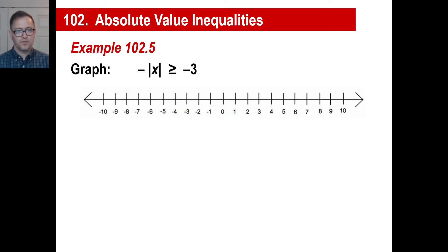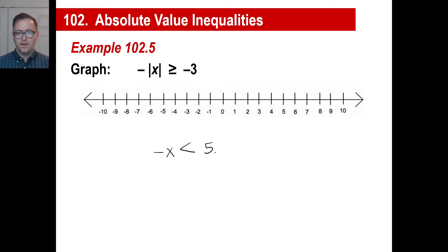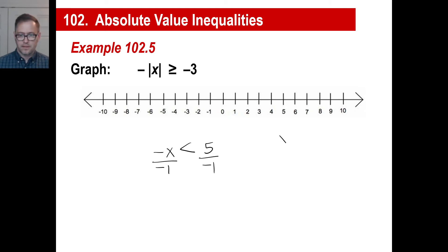Let's try a couple more. There's something strange here — there's a negative sign. Let's say we had negative x is less than five. Remember how to do those? We had to flip this. We don't want negative x; we want positive x. So we divide everything by negative one on both sides of the equation. That gives us x, and it gives us negative five. But recall — when we divide by negative one, we have to flip the inequality sign. So that's going to be greater than.